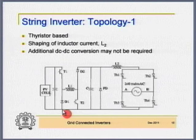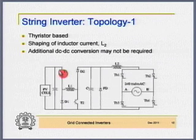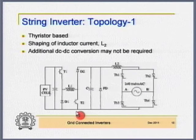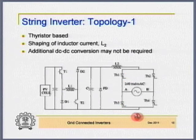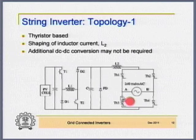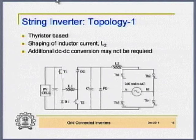I will turn on these two switches, current builds up, then open it — current flows through the diode and charges the capacitor. There is an inductor L2, and these are the four thyristors. The duty cycles of T1 and T2 are varied sinusoidally. Why? Because we want the current fed to the source to be sinusoidal and in phase with the voltage — that is the requirement.